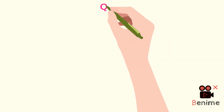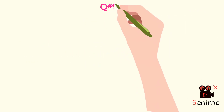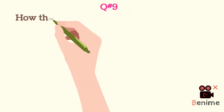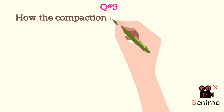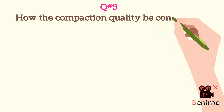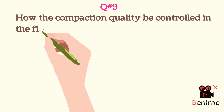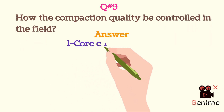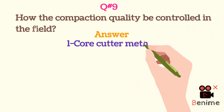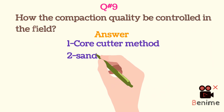Question 9: How can the compaction quality be controlled in the field? 1) Core cutter method, 2) Sand cone method.